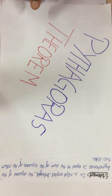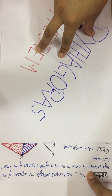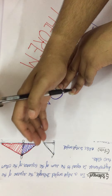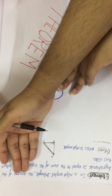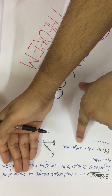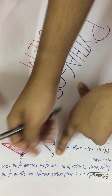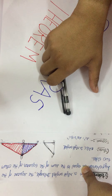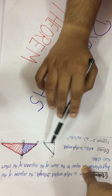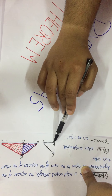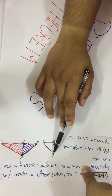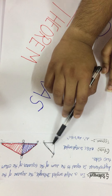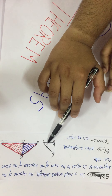Now, what is given to us? Triangle ABC is a right-angled triangle — that is all that is given to us. What do we have to prove? We have to prove that AC² = AB² + BC². To prove this, this diagram is not enough — we need some extra construction.